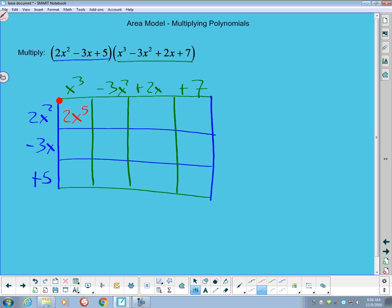I'll work my way across the top here and get -6x⁴ there, 4x³ there, and 14x² there. Coming back down to the middle, I get -3x⁴.